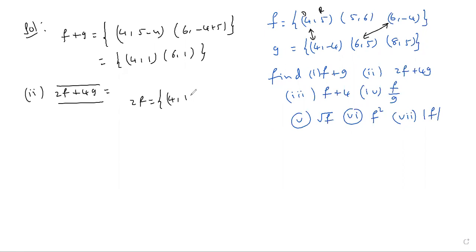Multiply the first element: 2 into 5, 2 into 6. Next, 2 into -4 equals -8. Very simple method. 4 into 5 equals 20.